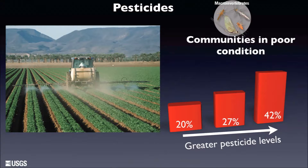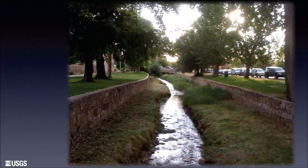To summarize, three important factors influence stream health across the country: modification of natural flows, excess nutrients, and pesticides. These factors are not equally important everywhere, nor are they the only factors impairing stream health. In any given stream, it is very likely that many factors are at play. To illustrate this, I want to tell you a story about Shingle Creek, a stream in an urban watershed in Minnesota.